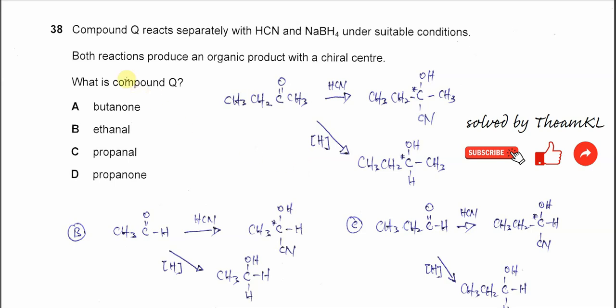Question 38. Compound Q reacts separately with HCN and sodium borohydride under suitable conditions. Both reactions produce an organic product with a chiral center. What is compound Q? We need to try each option until we get the correct answer.